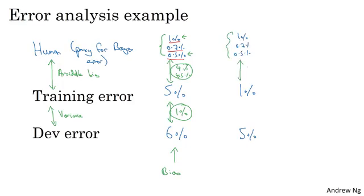your measure of avoidable bias will be somewhere between 0%, if you use that, to 0.5%, right? That's the gap between the human-level performance and your training error, whereas this gap is 4%. So this 4% is going to be much bigger than the avoidable bias either way. And so this suggests you should focus on variance reduction techniques, such as regularization or getting a bigger training set.